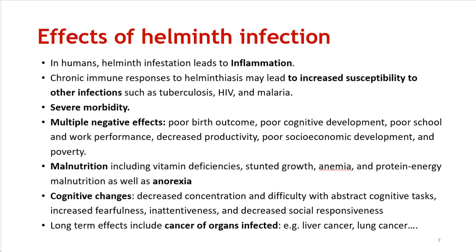The negative effects include poor birth outcomes, cognitive development issues, reduced school and work performance, decreased productivity, and socioeconomic underdevelopment — and this adds to the cycle of never-ending poverty. Because of helminths feeding off their hosts, malnutrition is one of the most common end results, leading to vitamin deficiency, stunted growth, anemia because there are blood-sucking flukes, and a loss in protein or energy leading to anorexia. Cognitive changes are the biggest challenge because they lead in later life to fearfulness, inattentiveness, and decreased social responsiveness.